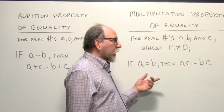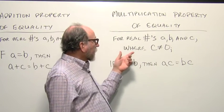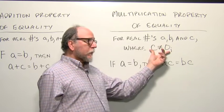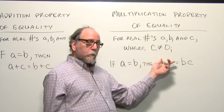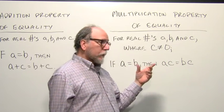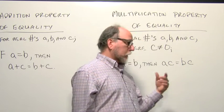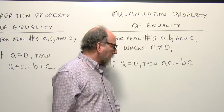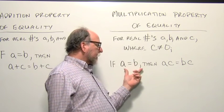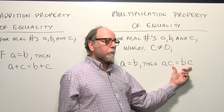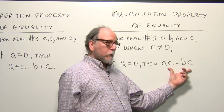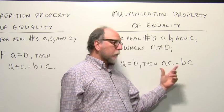Another property is the multiplication property of equality. It's similar. Using real numbers a, b, and c again, we have to stipulate that c cannot be zero, because what happens when you multiply by zero? Everything becomes zero. So we could have something unequal, multiply both sides by zero and get an equation. That wouldn't work. So if we know a is equal to b with that stipulation, then we can multiply both sides of an equation by a number and get an equivalent equation. It's still going to be equal, and a and b will still have the same values.